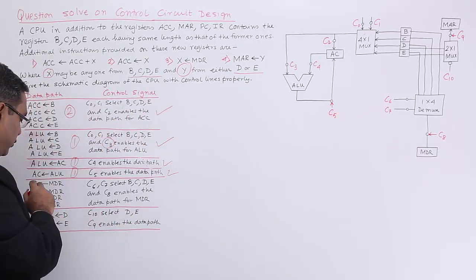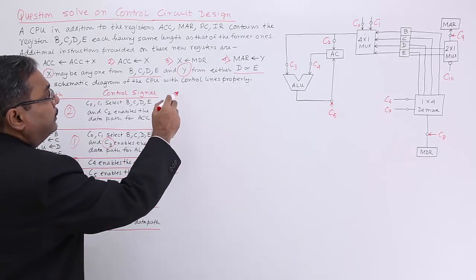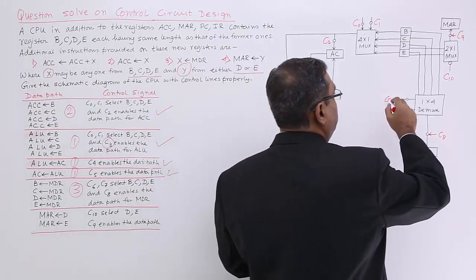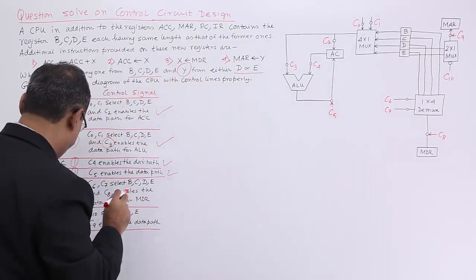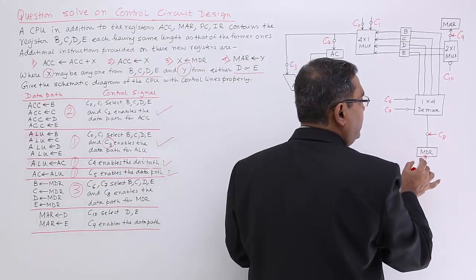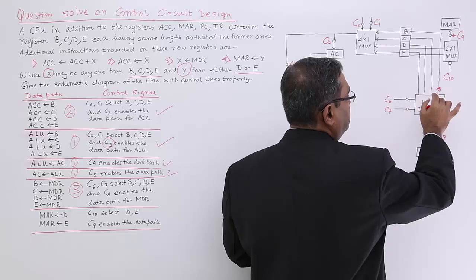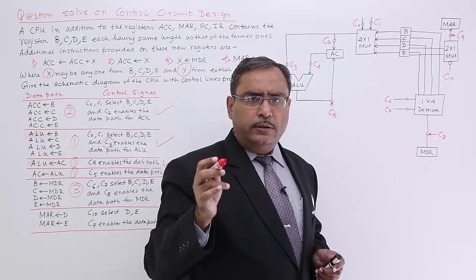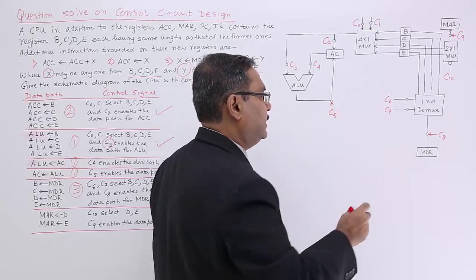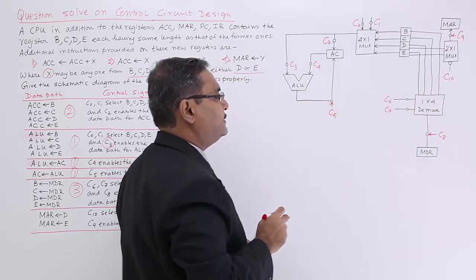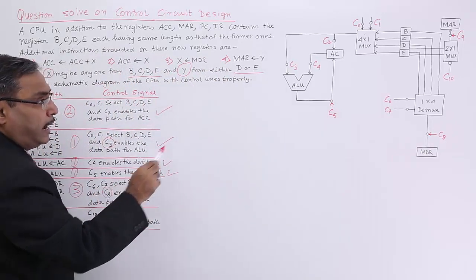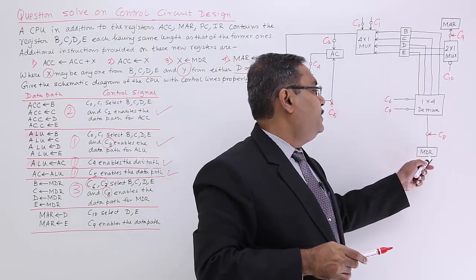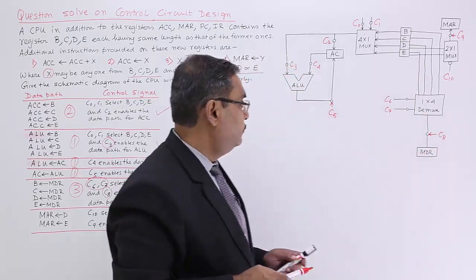Next, MDR content will be going to either B, C, D, or E. C6 and C7 will select which register will be the destination, and MDR content will be going there. A DEMUX will be used — DEMUX always has one input and 2-to-the-N output lines with N select lines. C8 will enable the data path, while C6 and C7 decide to which register the MDR content goes.